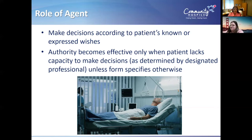The role of the agent is making decisions according to the patient's known and expressed wishes. That's why it's important that it's somebody you've talked to about what you do and don't want. The authority to speak on behalf of the patient only becomes effective when the patient lacks capacity to make decisions, unless it's been determined otherwise and specified in the form.